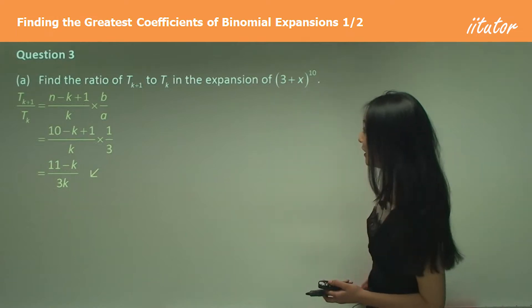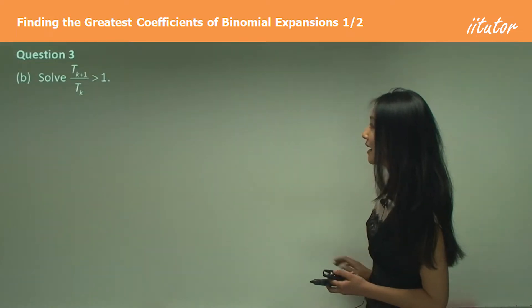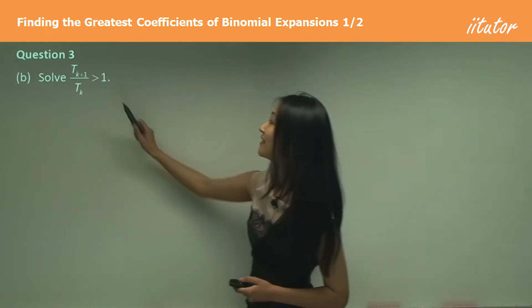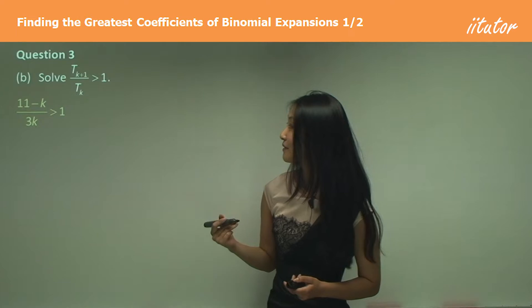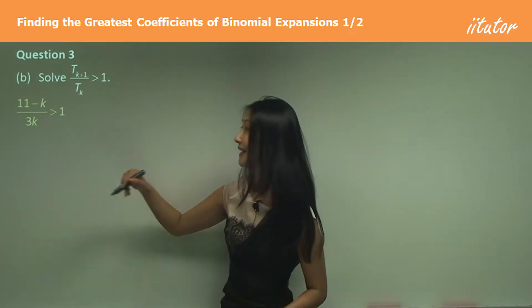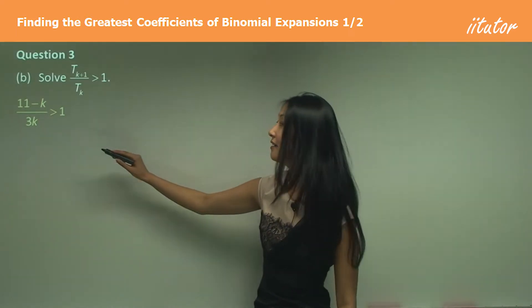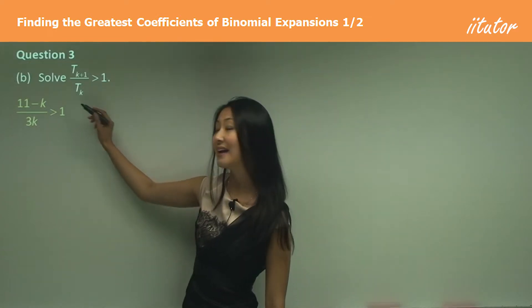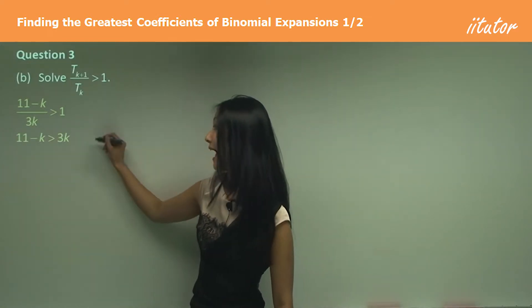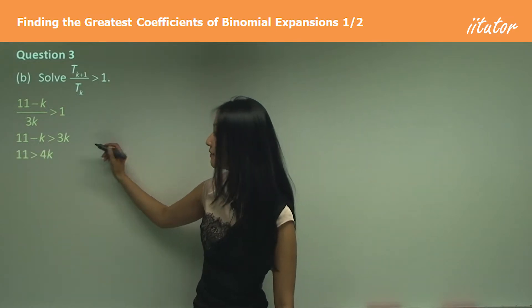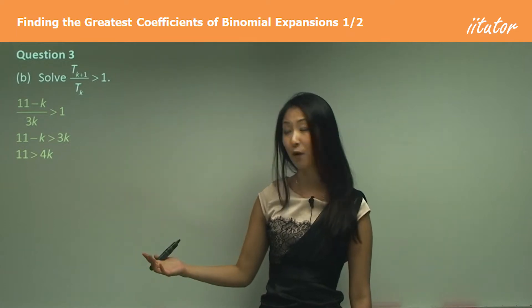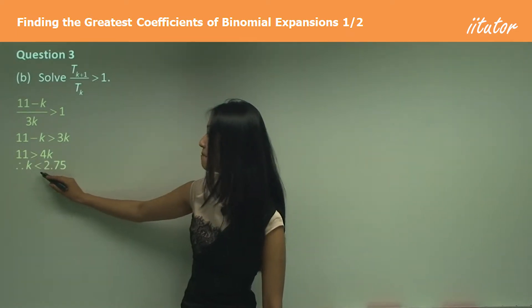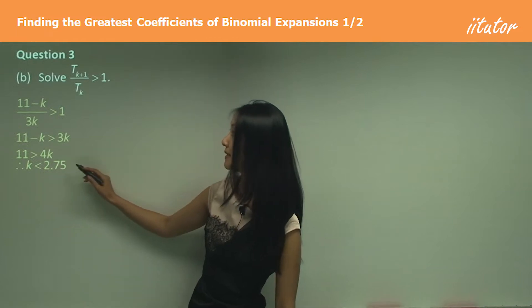Now we've worked out the ratio, the next step is to solve for when this ratio is greater than 1. We have (11 minus k) on 3k greater than 1. Multiplying across and adding k to that side gives 11 is greater than 4k. Dividing both sides by 4, k must be less than 2.75 for this ratio to be greater than 1.